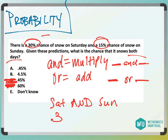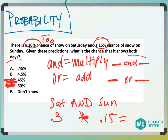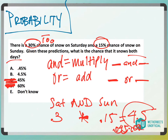Percent just means over 100 — 0.3. And then 'and' Sunday, 0.15. We're going to multiply those: 0.3 times 0.15, and then we'd multiply by 100 to get a percent, which would be 4.5. So you'd get 0.045, and then multiplied by 100 to get a percent — move it over — so it would be 4.5%.